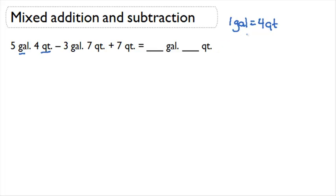So if 1 gallon is equal to 4 quarts, and here in our first number we have 5 gallons, this is going to be the same as saying 5 times 4 quarts in each gallon, which is 20, plus the 4 quarts we already had. So here we have 24 quarts for our first term.